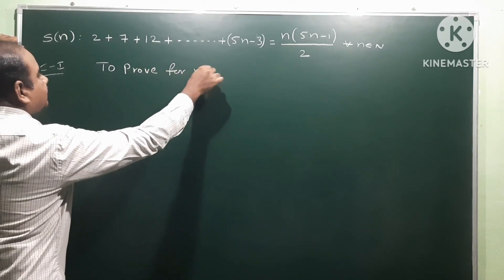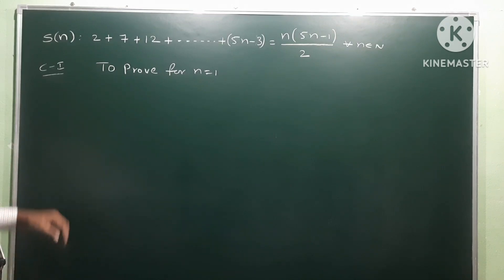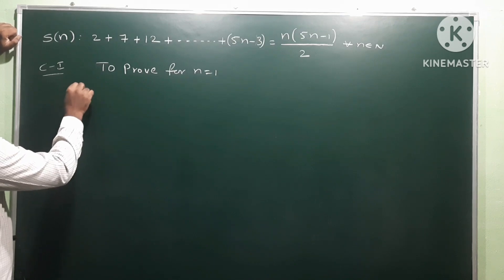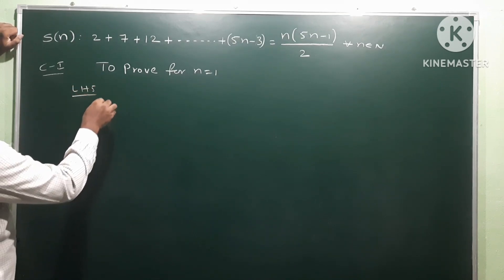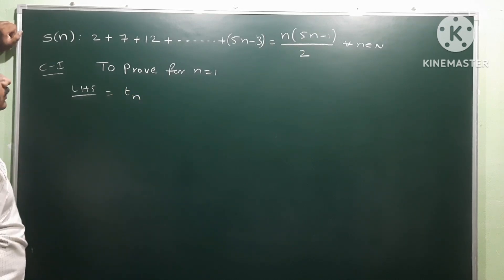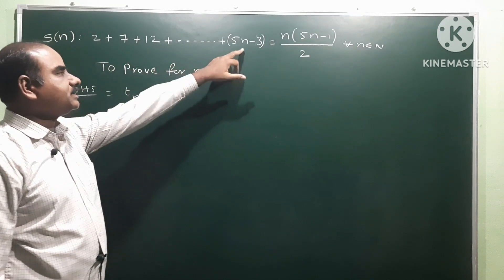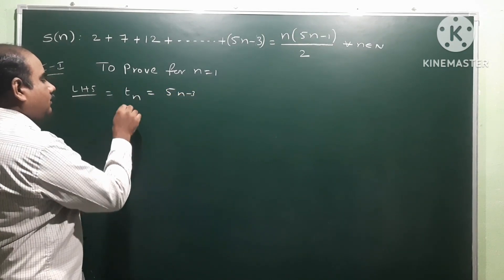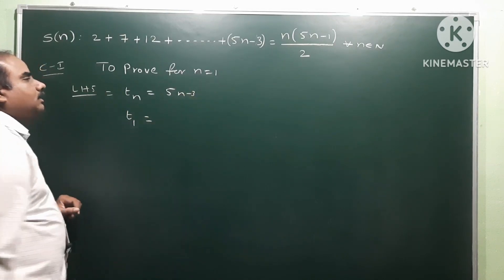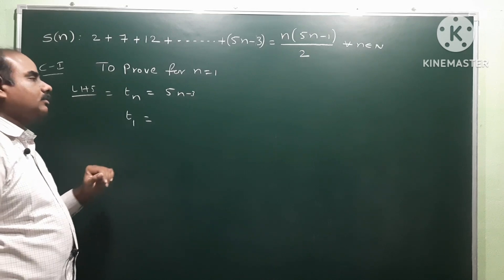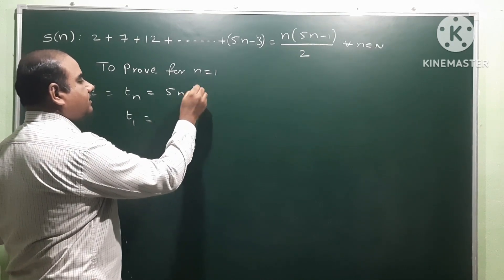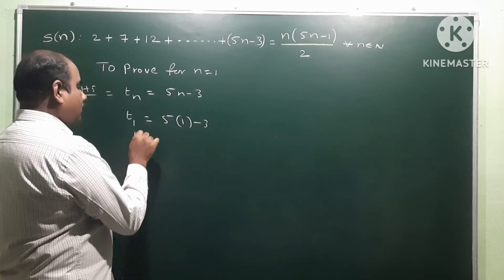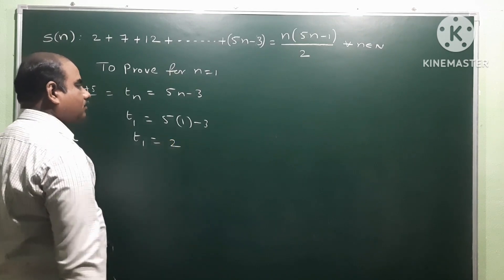To prove: for n is equal to 1. The first term, second term, third term, and the nth term is 5n minus 3. We check S1 for n equal to 1. So substituting into 5n minus 3, we get 5 into 1 minus 3.